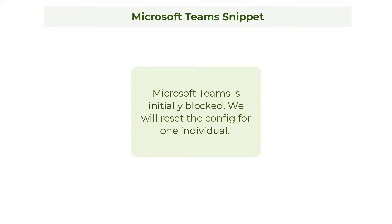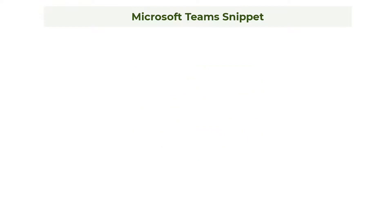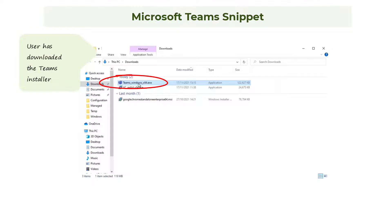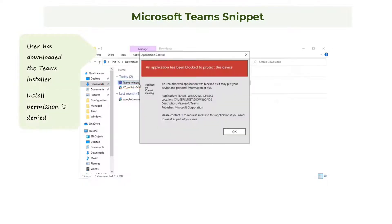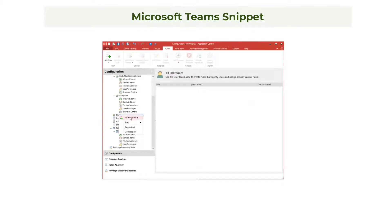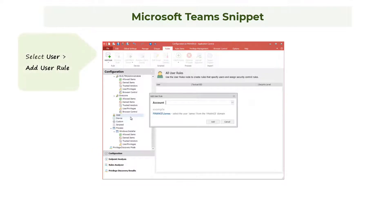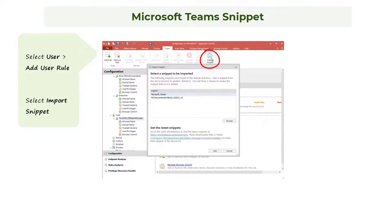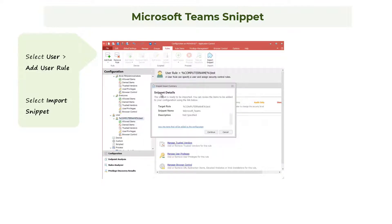Our second example uses a snippet to allow users to install and run an application — in this case, Microsoft Teams. A test user has downloaded the Teams installer, but when they try to run it, the action is denied. By importing a snippet, our configuration can be updated for a specific user with an allow rule and settings. We simply select or specify the user, then from the ribbon menu select Import Snippet. We select the previously downloaded Teams snippet and import it into our configuration.